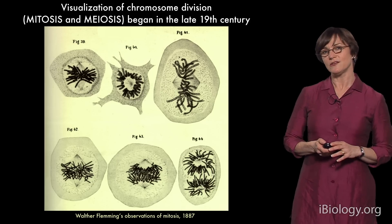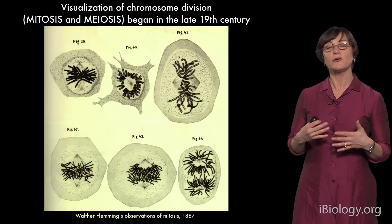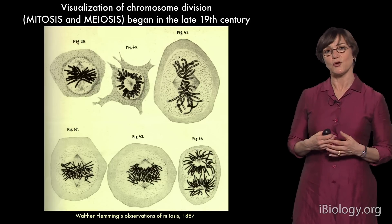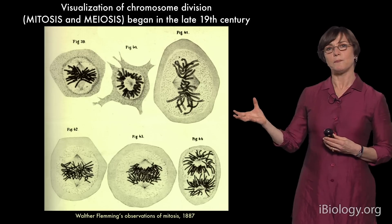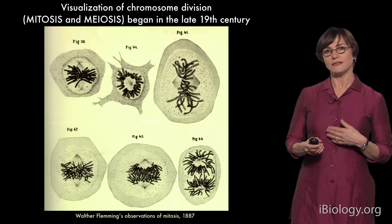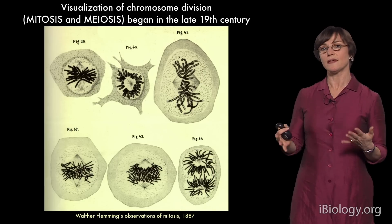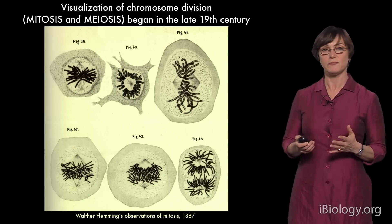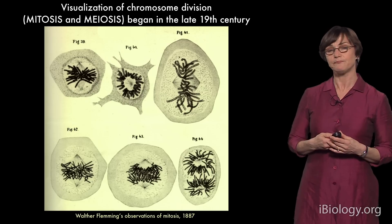People started noticing in the mid-19th century, when they started looking through the microscope at stained cells, they would notice these dark bodies in the nucleus, and they started looking at the process of cell division, first looking at mitosis, which is much more familiar to most biologists than meiosis.